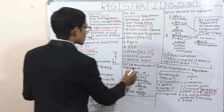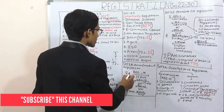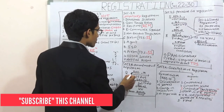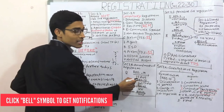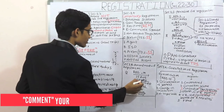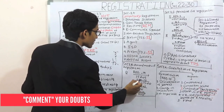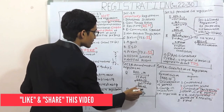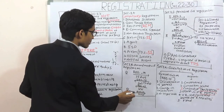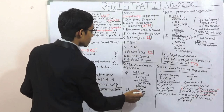Section number 28 — amendment of registration. If you want to amend the registration, an application must be made in REG 14 within 15 days from the date of such change. It will be approved within 15 working days in REG 15. Otherwise, a show cause notice will be issued in REG 3, and a reply must be given within 7 working days in REG 4.